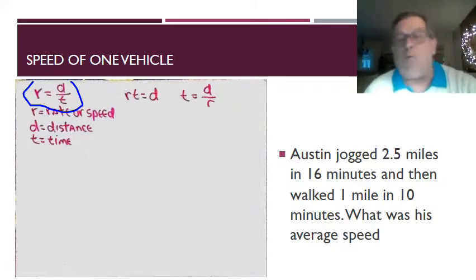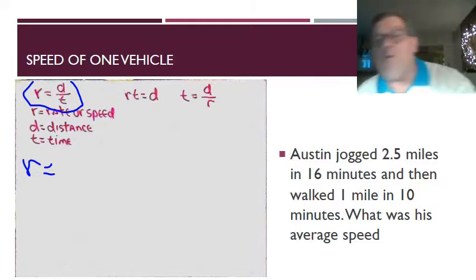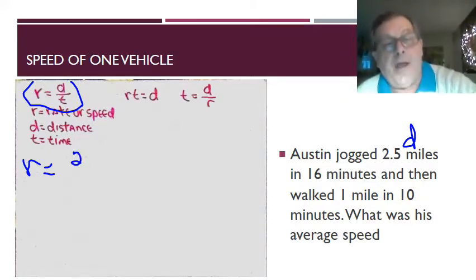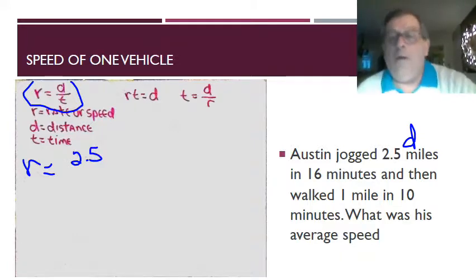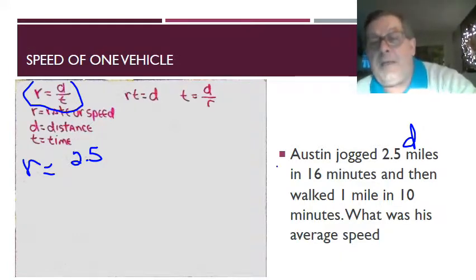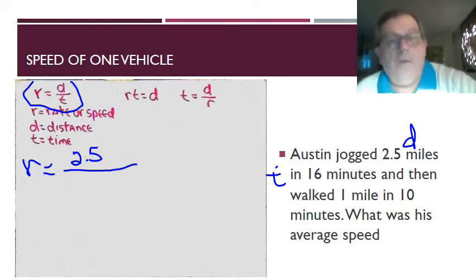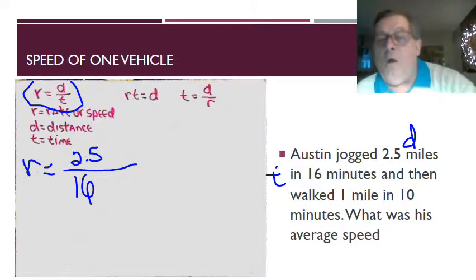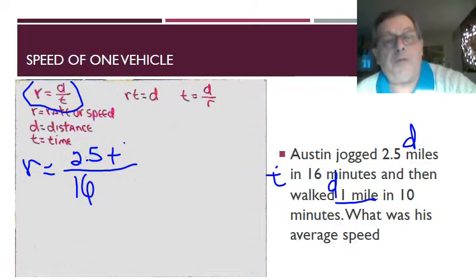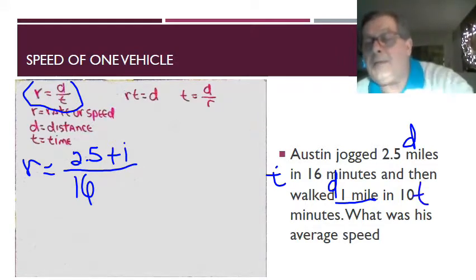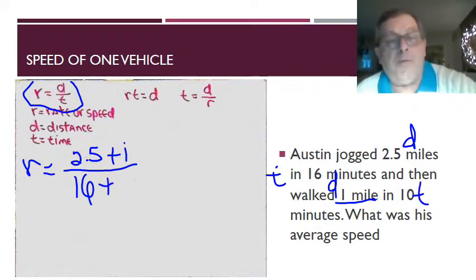We got rate equals, now let's see, he jogged two and a half miles, well that's a distance, let's put in here two and a half. He did it in 16 minutes, well that's time, so we got 16 minutes. And then he walked one mile, well that's a distance, so we got two and a half now plus one. And he did that in 10 minutes, which is also time, so we go plus 10.